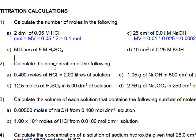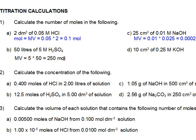50 litres of 5 molar sulphuric acid. Well, MV equals molarity times volume, 5 times 50, and that comes to 250 moles. I'll give you a bit of space here, 250 moles.